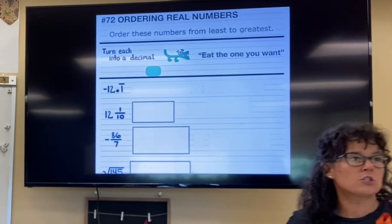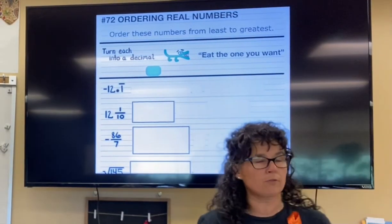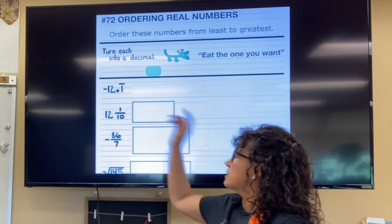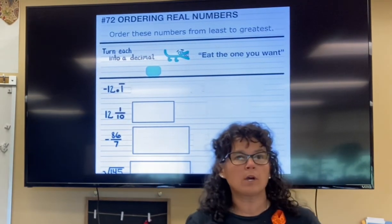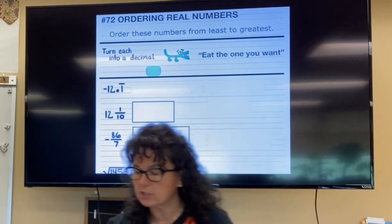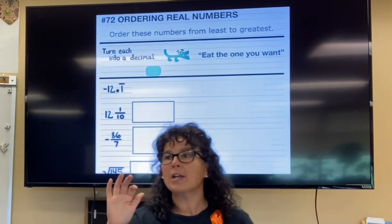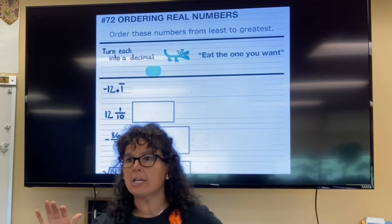If we want, we're going to have a bunch of numbers that we want to put in order from least to greatest. This first number, negative 12.1 repeating. My recommendation is just go in and turn every number, first of all, into a decimal.